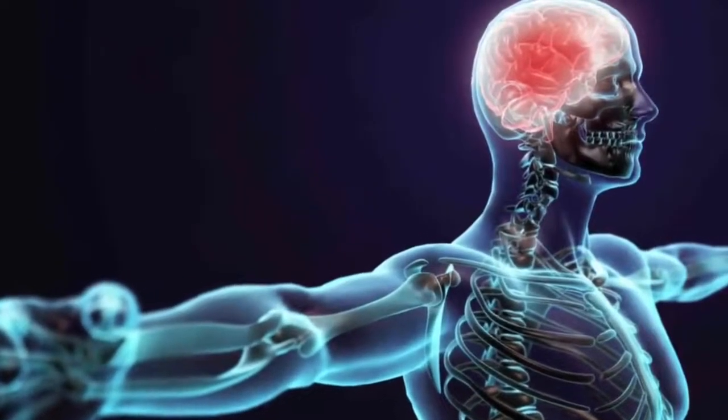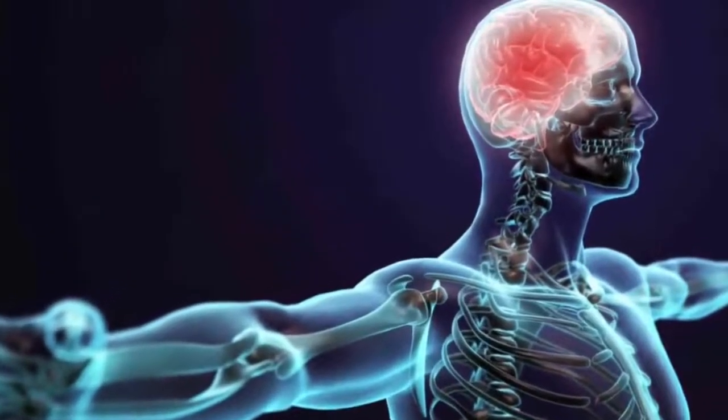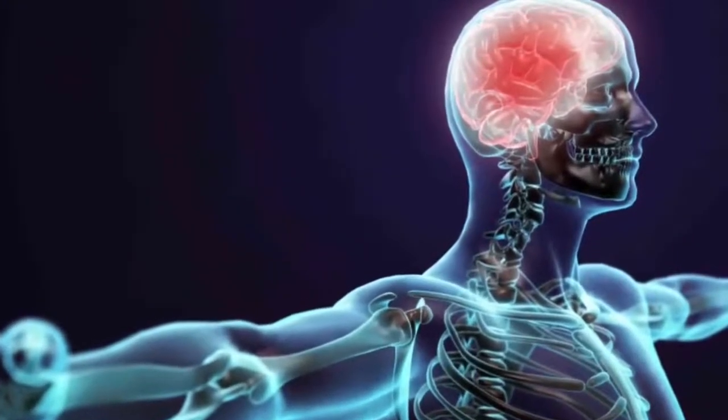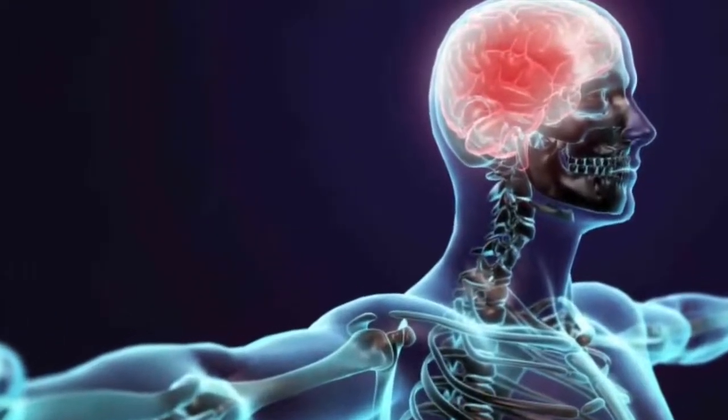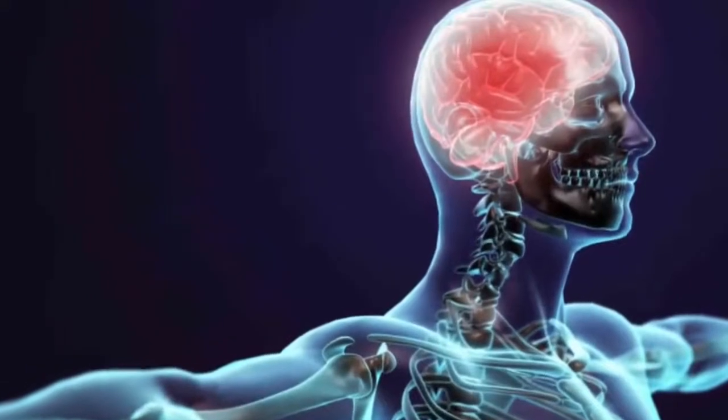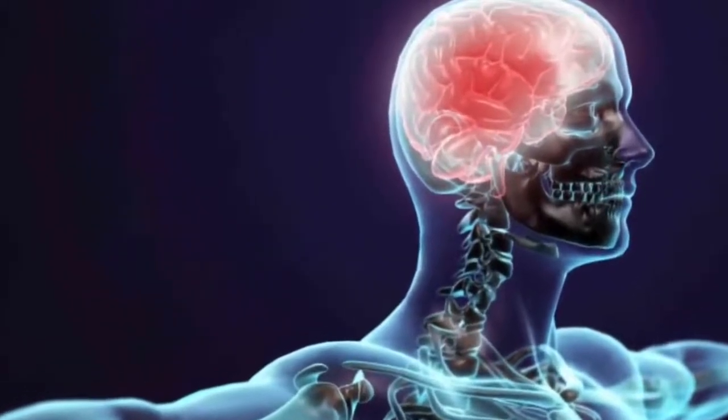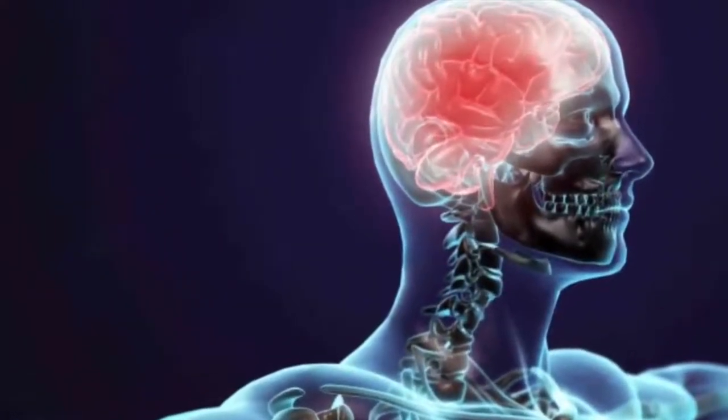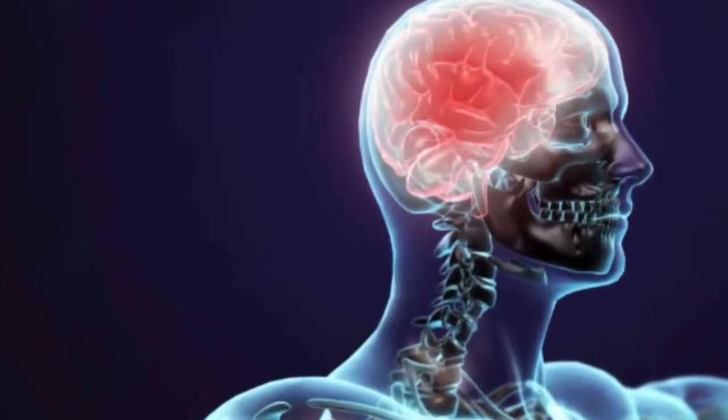Second, the peripheral nervous system. This is what brings signals in and information out from the central nervous system. For example, the peripheral nervous system brings signals in from sight, smell, touch, and even pain.